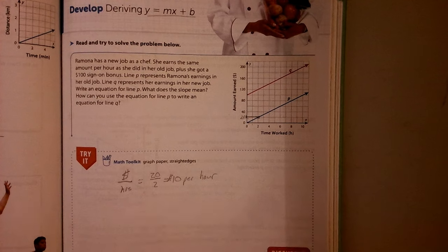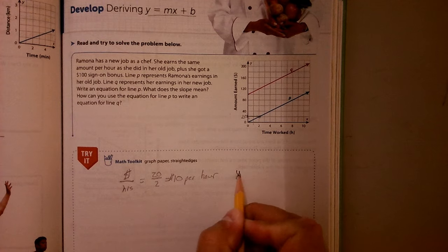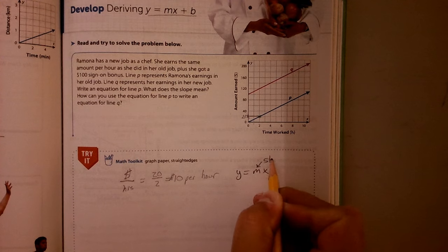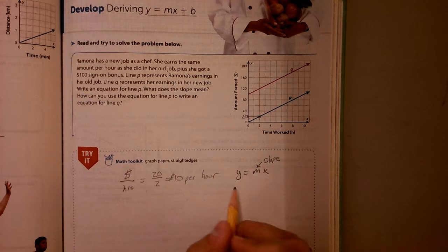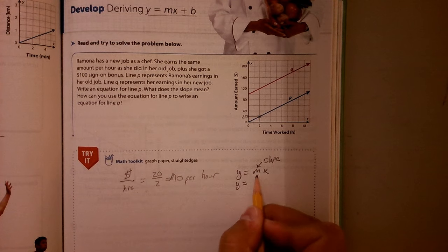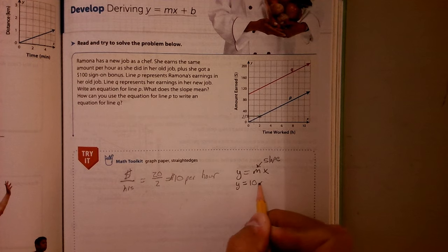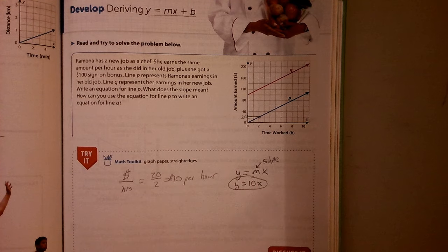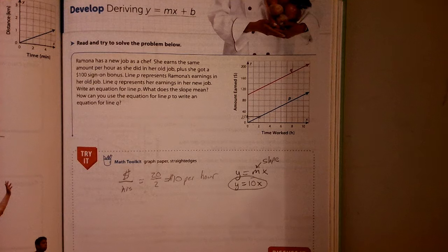So now if I wanted to write an equation, I would talk like Y equals MX, where M is the slope. So all I have to do is write Y equals, and then put my slope in, which was 10, and then X. So this would be the equation for the blue line, line P, her old job.